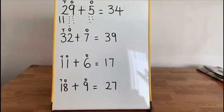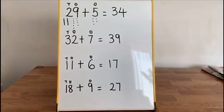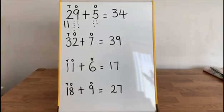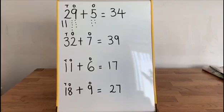Remember, for this last one, 18 add 9, you could have added 10 and taken away 1. 18 add 10 is 28. Take 1, 27.